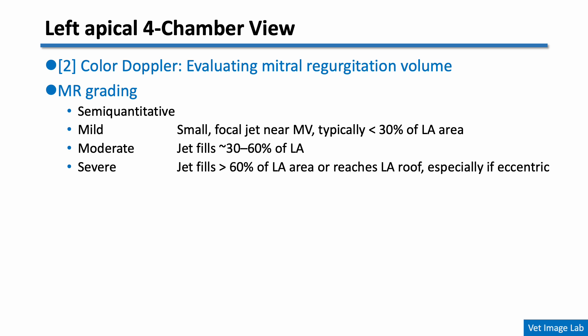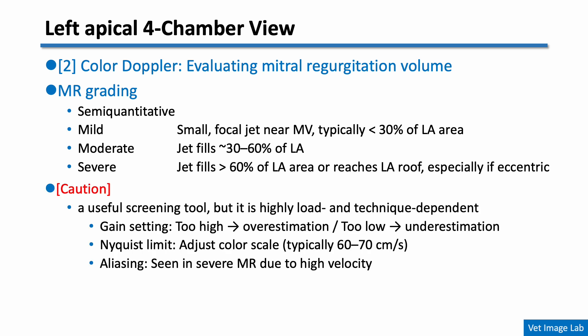Based on the estimated volume of mitral regurgitation on color Doppler, we can semi-quantitatively grade MR severity by evaluating the size and extent of the jet. If the jet is small, focal, and confined near the mitral valve, occupying less than 30% of the left atrial area, it is considered mild. If it fills approximately 30 to 60% of the left atrium, it is graded as moderate. If the jet fills more than 60%, it is classified as severe. If the jet is eccentric, it's considered severe when it reaches the LA roof. However, several technical factors can influence jet appearance, so interpretation should be made with caution.